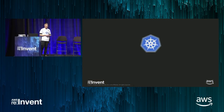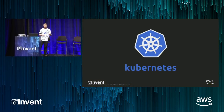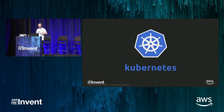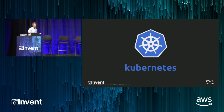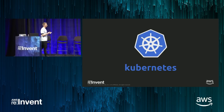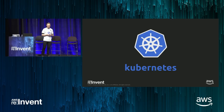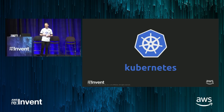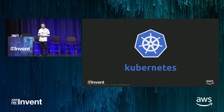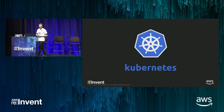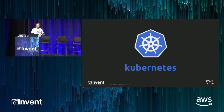Let's go ahead and get started. If you're not familiar with Kubernetes, we're going to talk a little bit about what that is. EKS is a service that helps you run Kubernetes at scale on AWS. We also need to get you up to speed with the world before EKS and after EKS.